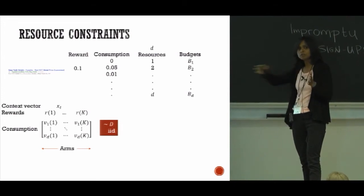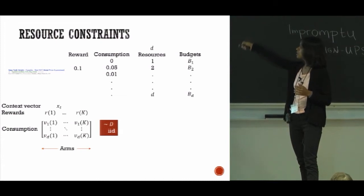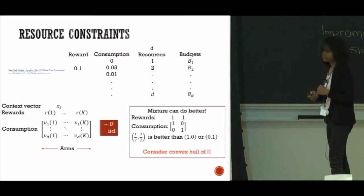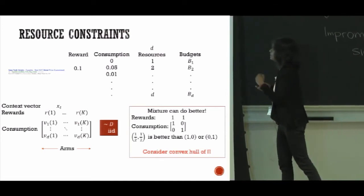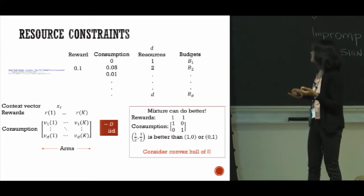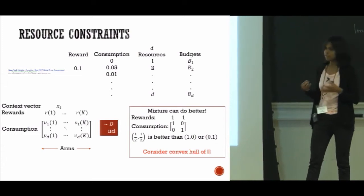This imposes additional constraints. There is already a constraint on the number of pulls which is there in multi-arm bandits, but there is also a constraint on the total consumption of budgets.